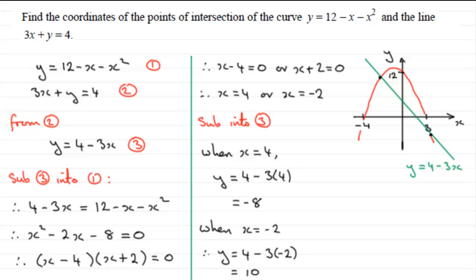So therefore in answer to our question, find the coordinates of the points of intersection. So we can say, therefore, points of intersection. Points of intersection, what are they? Well, they're going to be 4 minus 8. And the other point is minus 2, 10.